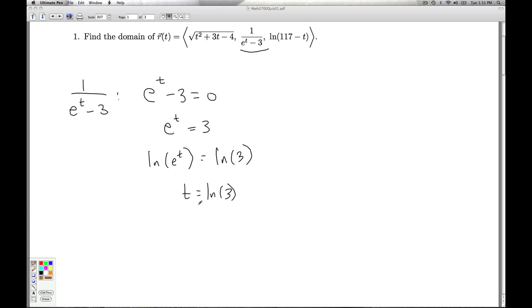This is the only real number which is going to make the denominator 0. So the values of t that are going to make this component happy is everything except natural log of 3. In other words, negative infinity to natural log of 3, union natural log of 3 on off to infinity.